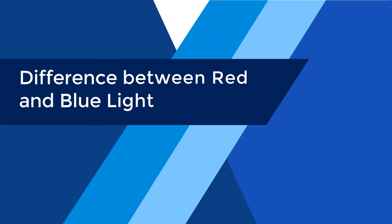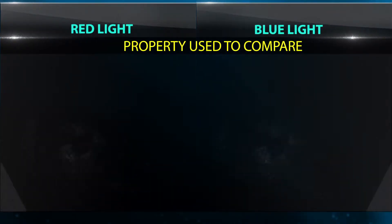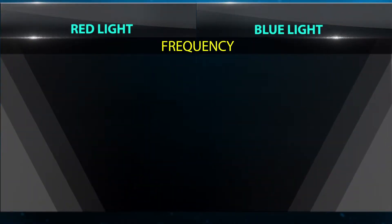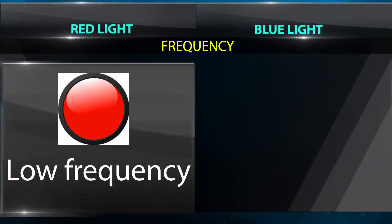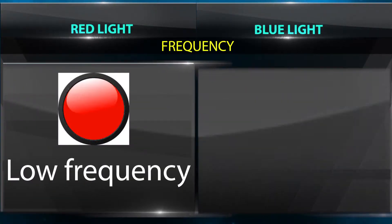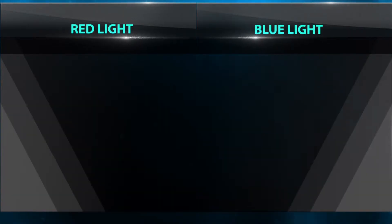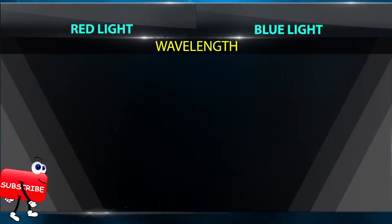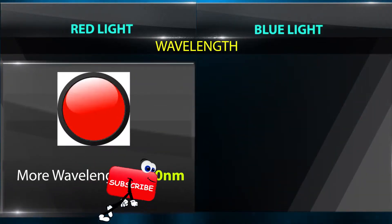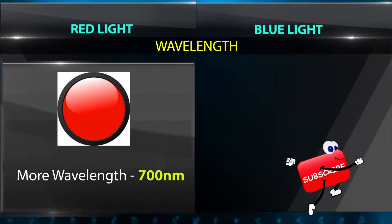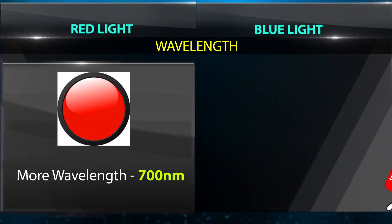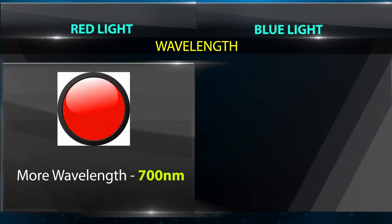Differences between red and blue light: frequency — red light has low frequency whereas blue light has high frequency. Wavelength — red light has more wavelength, approximately 700 nanometers.